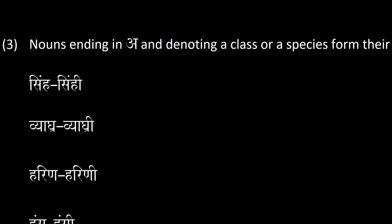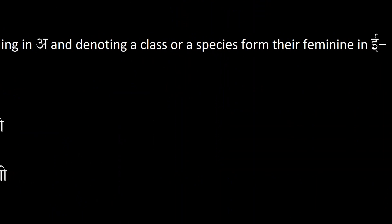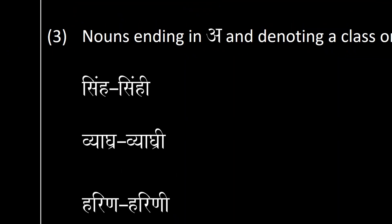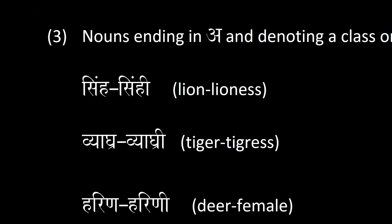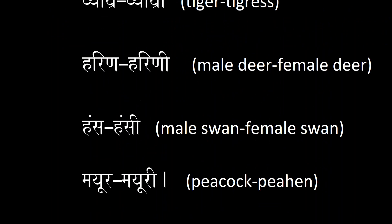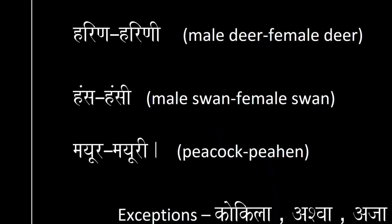Now we have nouns ending in 'a' denoting a class or species — in their feminine form, they take a long 'ī'. For example, siṃha means lion and siṃhī means lioness; vyāghra is tiger and vyāghrī is tigress; hariṇa is deer and hariṇī is female deer; haṃsa is male swan and haṃsī is female swan.